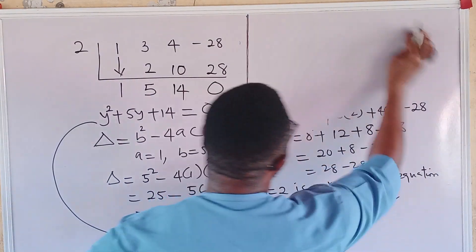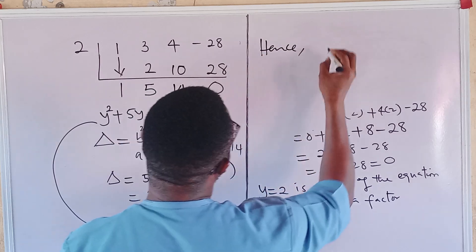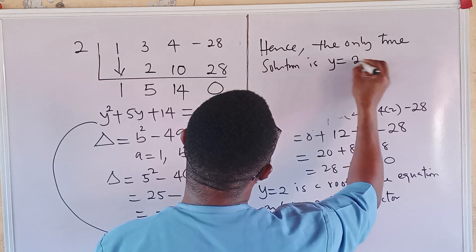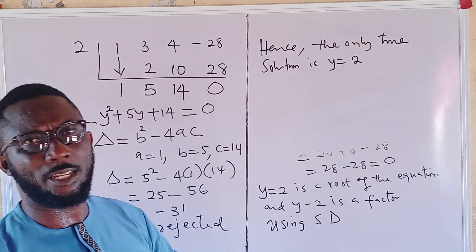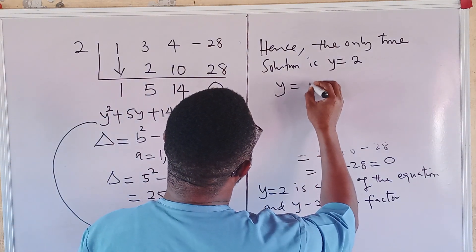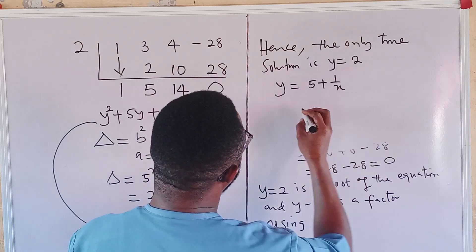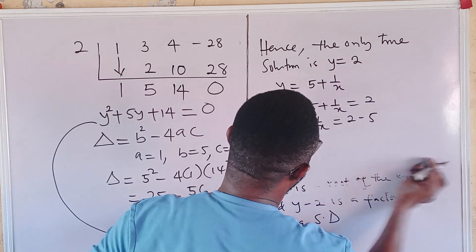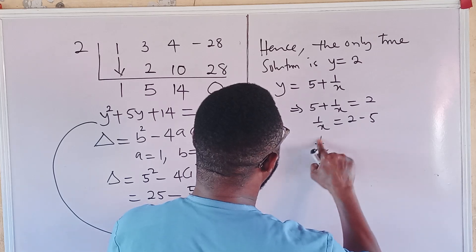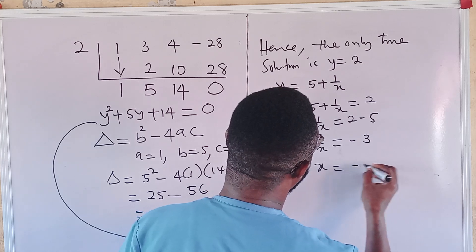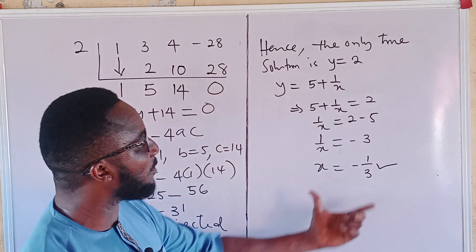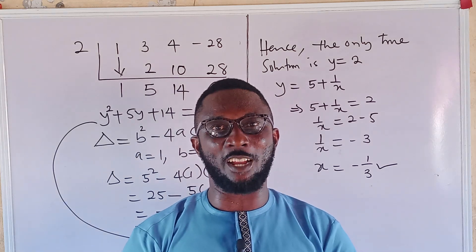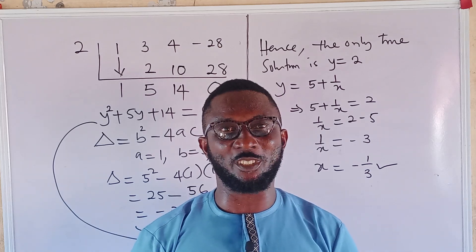The solution lies only in the complex plane, so the only real solution is y = 2. Recalling our substitution, y = 5 + 1/x. Setting this equal to 2: 5 + 1/x = 2, so 1/x = 2 minus 5 = negative 3, meaning x = negative 1/3. This is the only solution to the problem. Please like and subscribe, and turn on post notifications so you don't miss upcoming videos. See you next time and stay blessed.